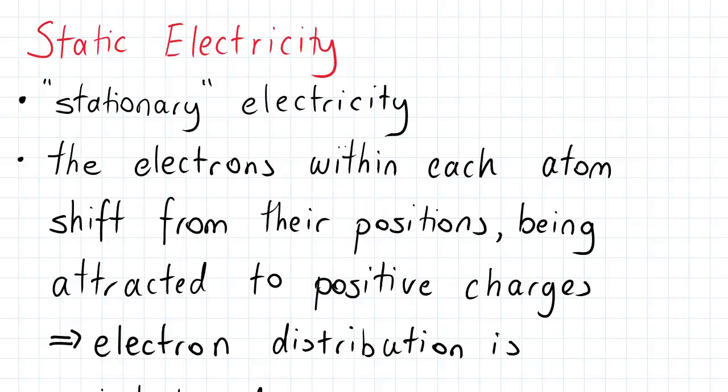So the first type of electricity we look at is static electricity. This is a somewhat stationary form of electricity.